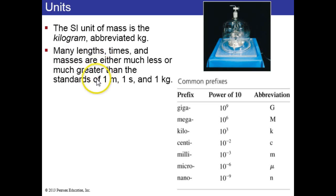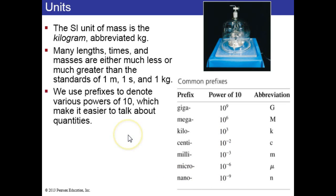Many lengths, times, and masses are either much less than or much greater than these standard units, one meter, one second, one kilogram. And so we have these common prefixes. Giga means 10 times 10 to the power 9, mega is 10 to the power 6, kilo is 10 to the power 3, centi, milli, micro, and nano. These prefixes denote various powers of 10 to make it easier to talk about quantities.